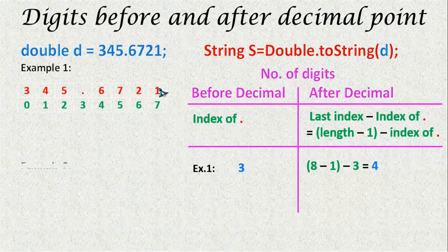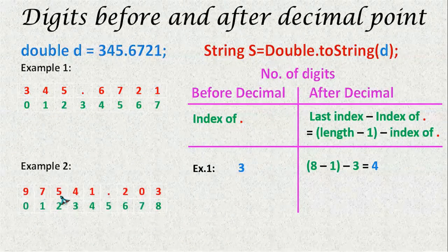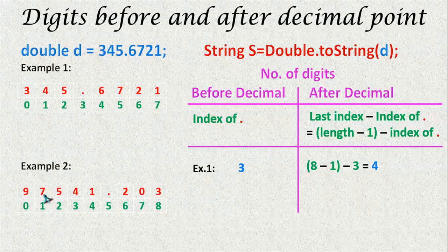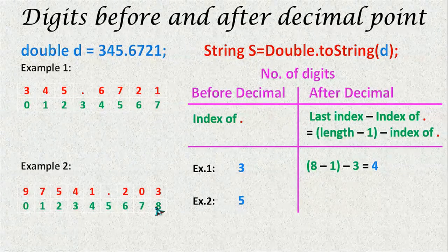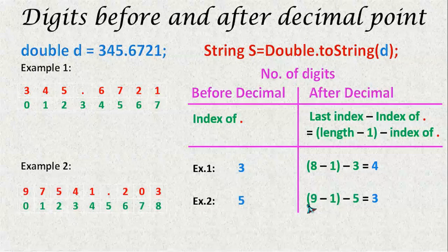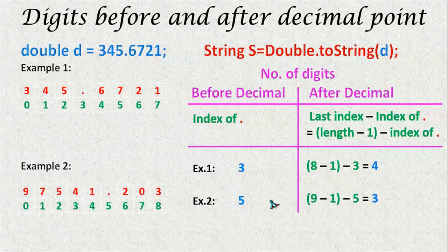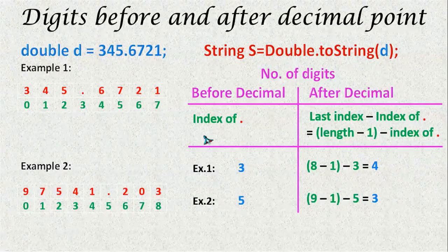Let us check with another example. Here I have another number. The index of this dot is 5, so 1, 2, 3, 4, 5 numbers are present before the decimal point. And there are 3 digits after the point. The total length of this is 9, minus 1 gives the last index 8, minus the index of dot which is 5, so we get 3 as the answer. This is the logic of extracting the number of digits present before and after the decimal point.